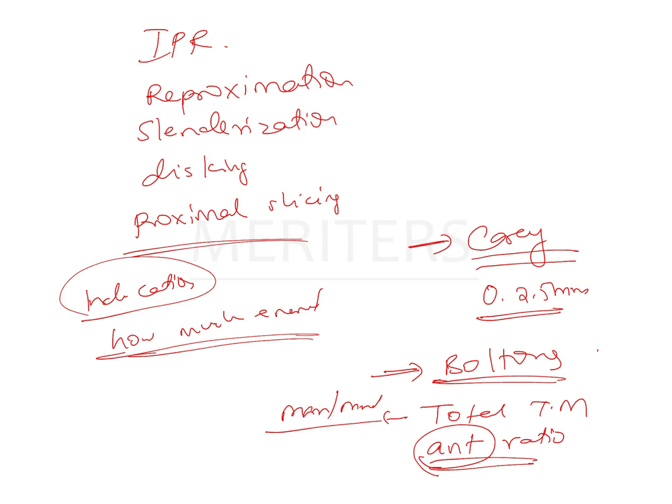For example, if the Bolton's ratio shows that there is an anterior mandibular tooth material excess, then we know that the interproximal reduction needs to be carried out only in the mandibular anterior areas. But if the Bolton's ratio shows that there is a total mandibular arch tooth material excess, this means we can do some amount of proximal stripping till the posterior teeth and it is not limited just to the anterior teeth.